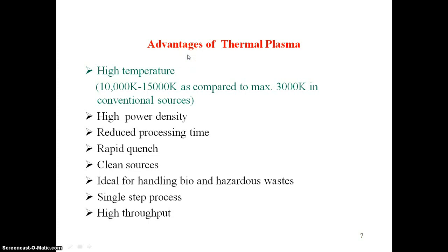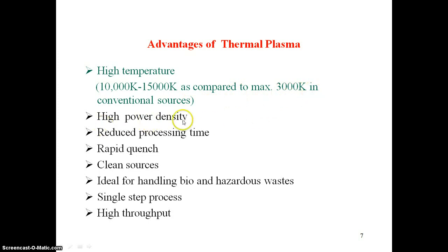The advantages of plasma torches are: high temperature from 10,000 K to 15,000 K compared with other conventional sources, where the maximum temperature in conventional sources is 3,000 K. They also offer high power density, reduced processing time, rapid quenching time, clean sources, and are ideal for handling bio and hazardous waste, with high throughput.